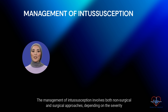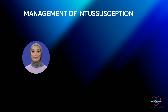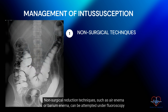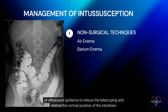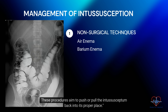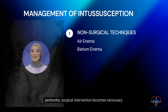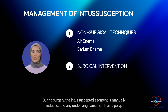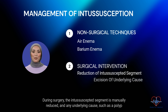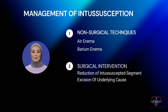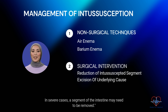The management of intussusception involves both non-surgical and surgical approaches, depending on the severity of the condition and the patient's stability. Non-surgical reduction techniques, such as air enema or barium enema, can be attempted under fluoroscopy or ultrasound guidance to reduce the telescoping and restore the normal position of the intestines, aiming to push or pull the intussusceptum back into its proper place. However, if non-surgical reduction fails, or if there are signs of intestinal necrosis, perforation, or peritonitis, surgical intervention becomes necessary. During surgery, the intussuscepted segment is manually reduced and any underlying cause such as a polyp or tumor is addressed. In severe cases, a segment of the intestine may need to be removed.